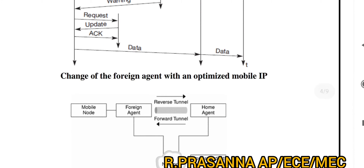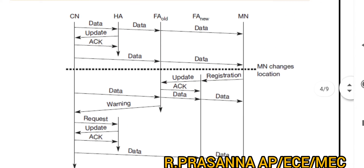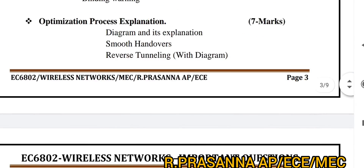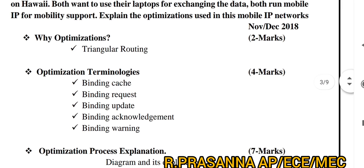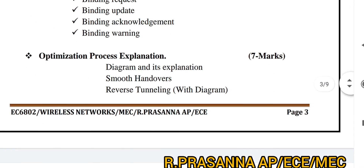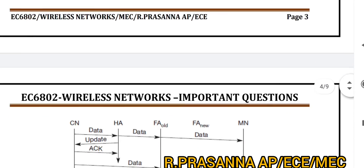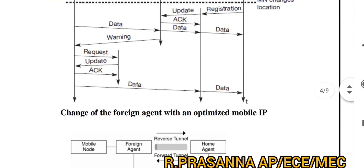If you look at the reverse tunneling diagram and the mark split-up: there are 2 marks for the definition, 4 marks for Optimization Terminologies, and 7 marks for Optimization Process Explanation. Complete is 13 marks.